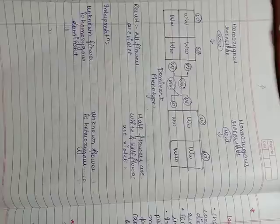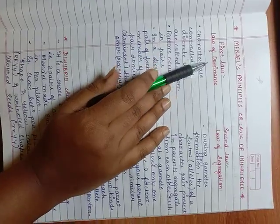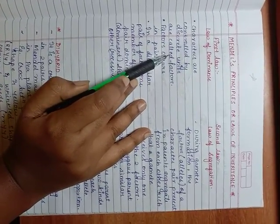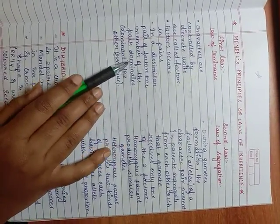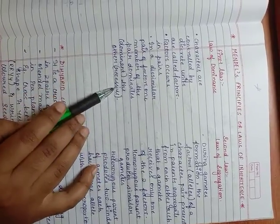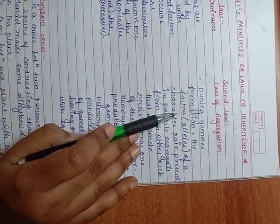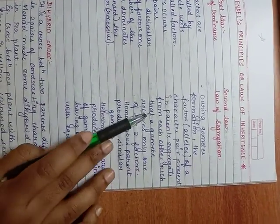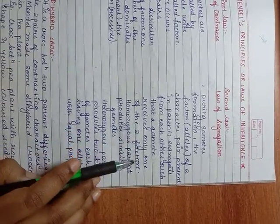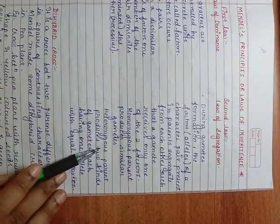Now we come to Mendel's principles or laws of inheritance. The first law, that is the law of dominance: Characters are controlled by discrete units called factors. Factors occur in pairs. In a dissimilar pair of factors, one member of the pair dominates the other, which is recessive. Then the second, we have the law of segregation. During gamete formation, the factor alleles of a character pair present in parents segregate from each other such that a gamete receives only one of the two factors. Homozygous parent produces similar gametes. Heterozygous parent produces two kinds of gametes, each having one allele with equal proportion.